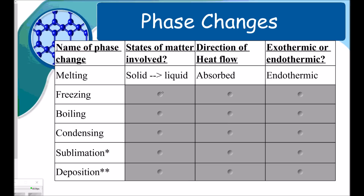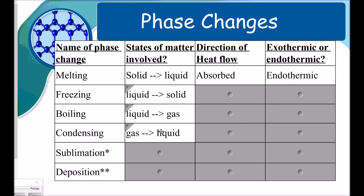For freezing, we go from a liquid to a solid. For boiling, liquid to a gas. Condensing is gas back to a liquid. Sublimation and deposition are probably new to you. Sublimation is when something goes from a solid straight to a gas — it doesn't pass through the liquid phase. Deposition is just the opposite: going from a gas to a solid.